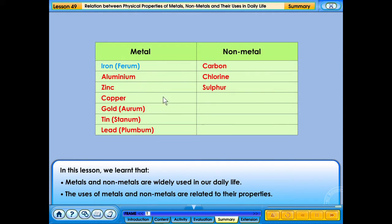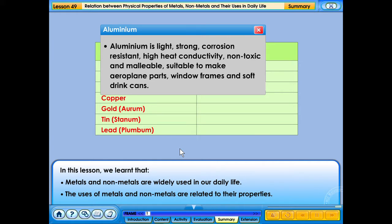Aluminum is light, strong, corrosion resistant, high heat conductivity, non-toxic and malleable. Suitable to make aeroplane parts, window frames and soft drink cans.